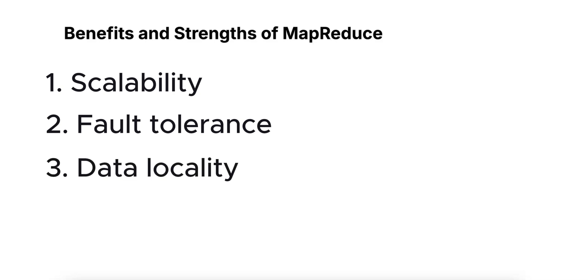Number three is data locality. MapReduce maximizes efficiency by moving computation to the data, for example, executing the mapper tasks on the nodes where the data resides, a concept called data locality.